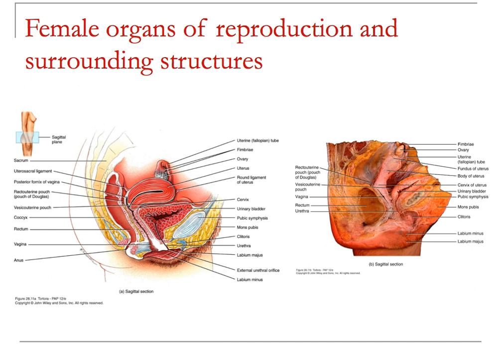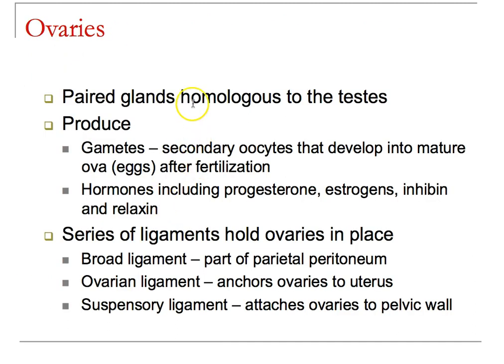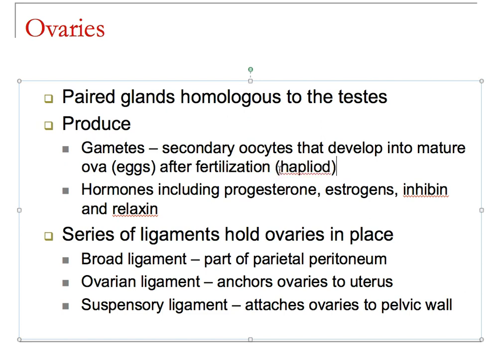The ovaries are paired glands — homologous structures to the testes — as I was trying to tell you a few minutes ago. They make gametes, and those gametes again are going to be haploid structures. They also create hormones, and you'll notice the list of hormones here is greater than that of the male reproductive system. The ovaries will make progesterone, estrogens, inhibin, and relaxin, among others.